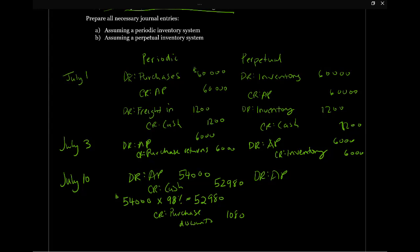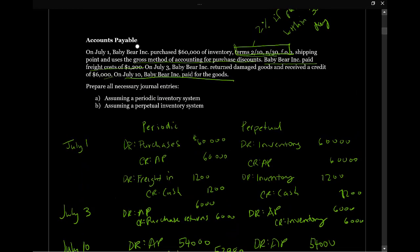Now let's look at the perpetual system. We still have accounts payable of $54,000, which is $60,000 less the $6,000 return. Cash is still $52,980 because we're getting the same 2% discount. The difference is how we handle the balancing entry: in the periodic system we used a purchase discounts account, but in the perpetual system everything goes directly to inventory. So the $1,080 is credited to inventory. That outlines how Baby Bear would account for these transactions, many of which hit accounts payable, using the two different types of inventory accounting.